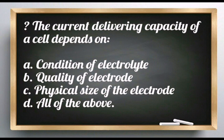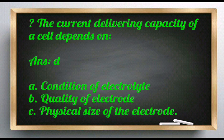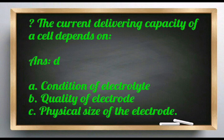The current delivering capacity of a cell depends on: condition of electrolyte, quality of electrode, physical size of the electrode. Answer: Option D, all of the above. The current delivering capacity depends on the electrode condition, the electrode quality, and physical size of the electrode.